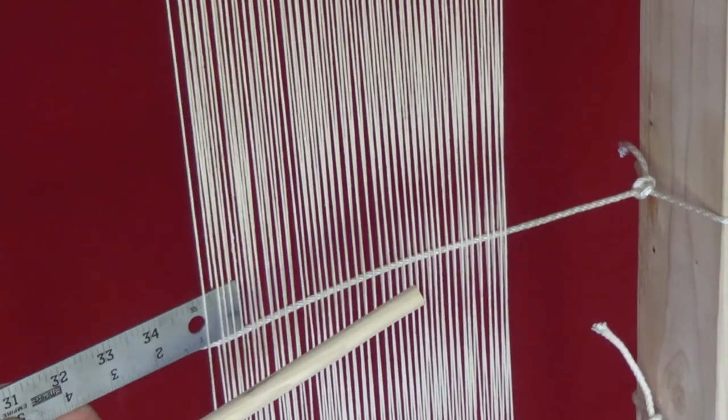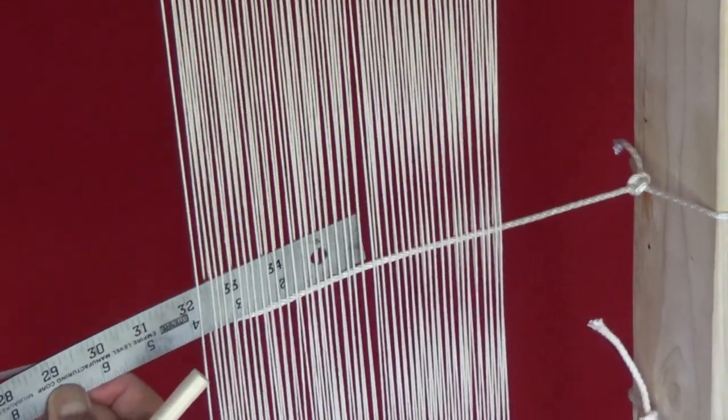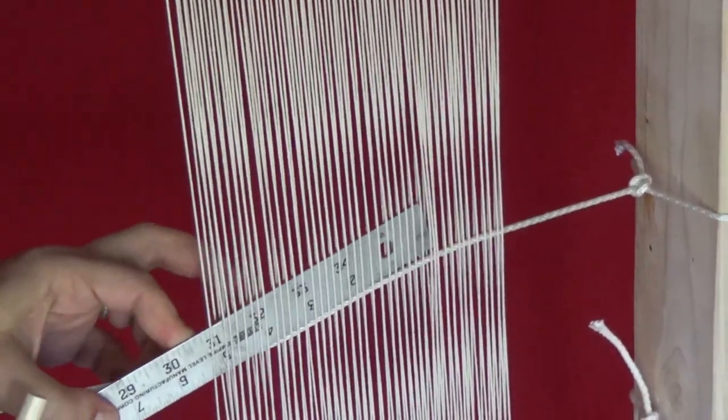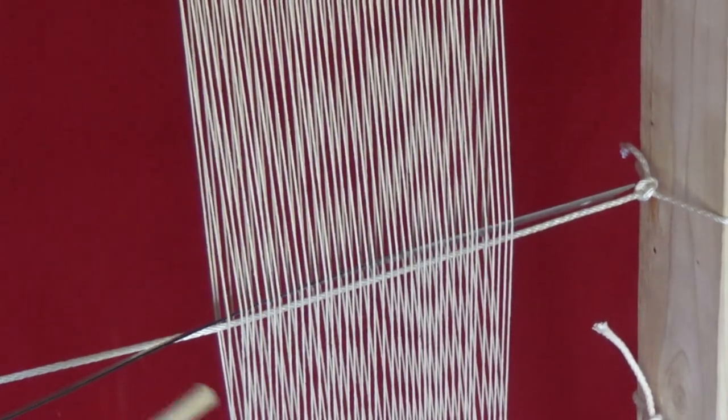Remember, that if you've done it right, the top string will be free to move. Create a gap of what is called a shed by tilting the ruler and add the shed stick.